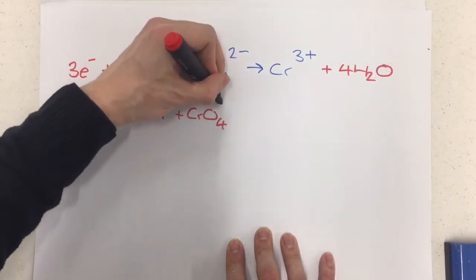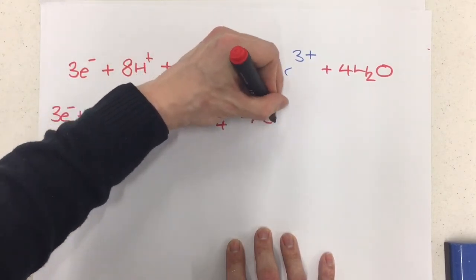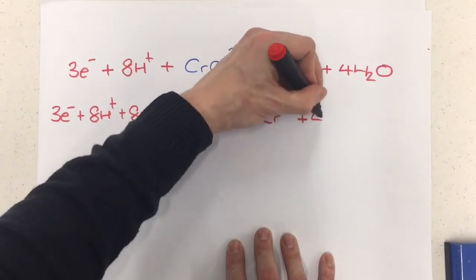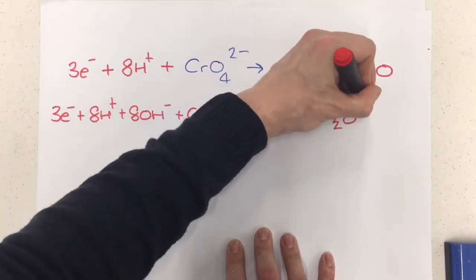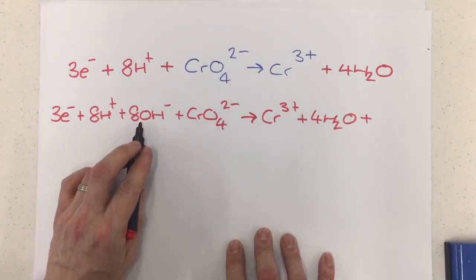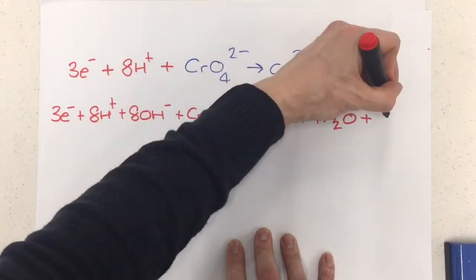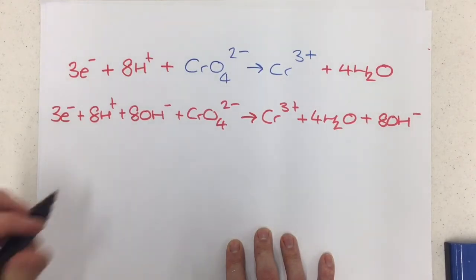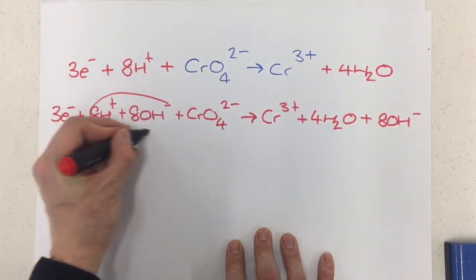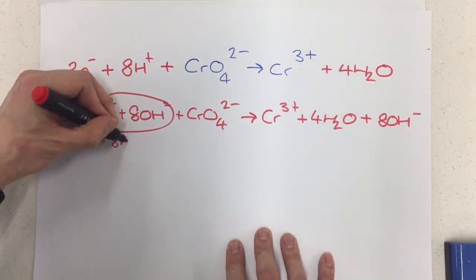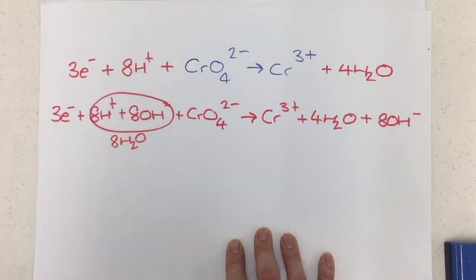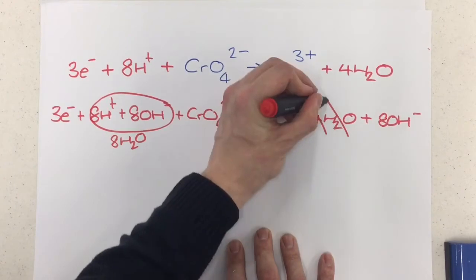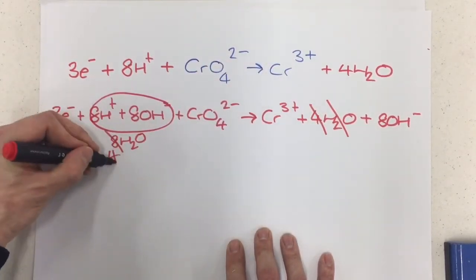So I've got 3e- plus 8H+, plus 8OH-, plus the CrO4^2-, to get the chromium 3+, the 4H2O, and same as on this side here, 8OH-s were introduced, I introduce 8OH- onto the right-hand side as well. So now what I'm going to do is, I'm going to combine these together to get me 8H2Os on this left-hand side. These 8H2Os are going to cancel out 4 from there, leaving me with 4 on this side.